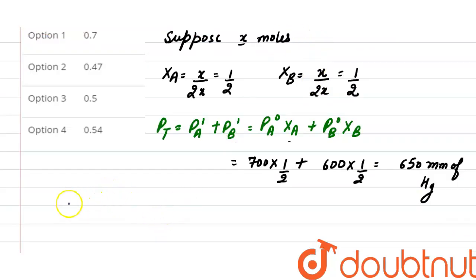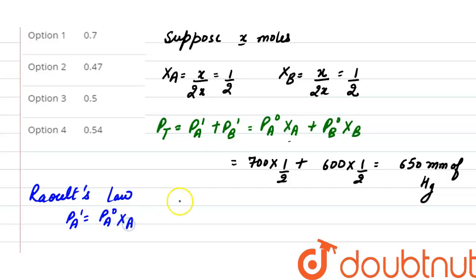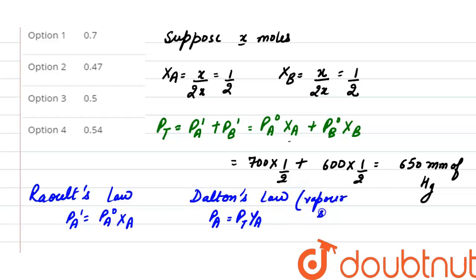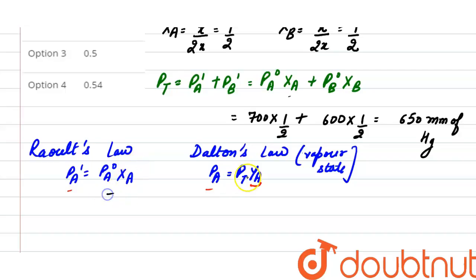Now we find the mole fraction in vapor state. By Raoult's Law, partial pressure equals vapor pressure in pure state times mole fraction in liquid state. By Dalton's Law, partial pressure also equals total pressure times mole fraction in vapor state. Since partial pressure of benzene is the same, we equate both expressions.